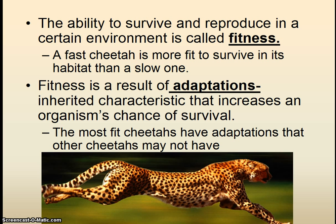Things that make the cheetah fast include its lung capacity, muscle tone, and bone structure. It also has highly developed senses — hearing, sight, and smell — and claws and teeth that enable it to capture prey. Look at the coat pattern: if that cheetah were albino, that would not be an adaptation — it wouldn't be the most fit. But because it has a coat pattern that allows it to be camouflaged in its environment, that's another one of its adaptations. All of these adaptations make it more fit to survive.